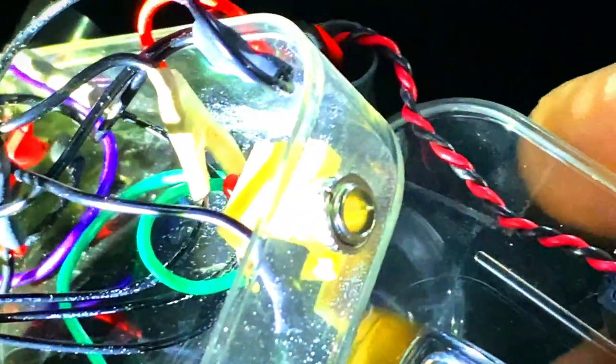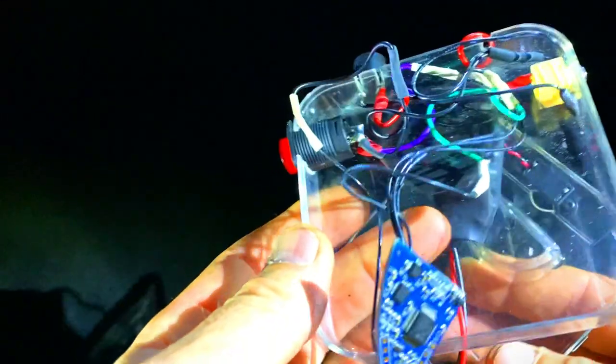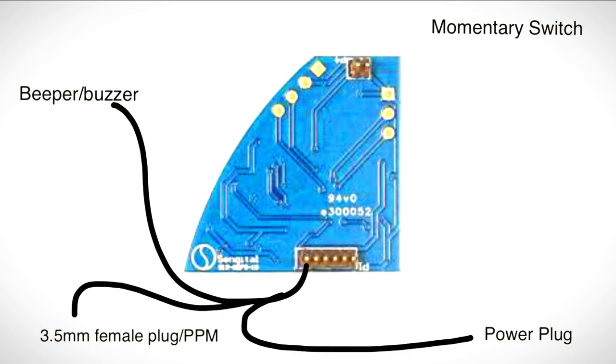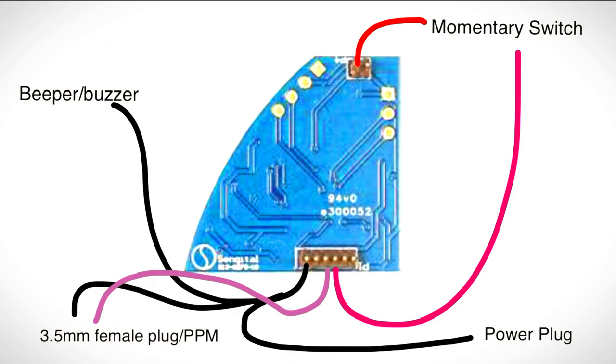Now let's work out where those other ends go. They'll obviously go to the components that I said you had, which is your momentary switch, your buzzer, your female 3.5 millimeter plug, and your female power plug. Now we need to know where all these wires are connecting to. Obviously the ground has got the three wires coming off the earth or negative, whatever you want to call it. One's going to the beeper or the buzzer, one's going to the 3.5 millimeter female plug for the PPM signal, and the other one is going to the power plug. Number three, the purple wire, is going off to your tip of your 3.5 millimeter female plug. Obviously the ground is heading to the negative of that, the ring or sleeve.